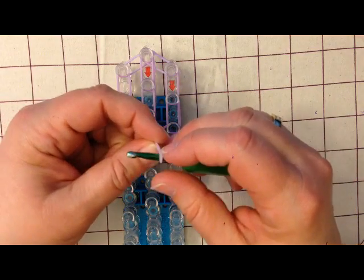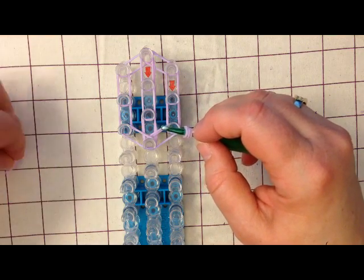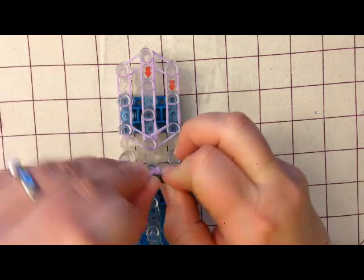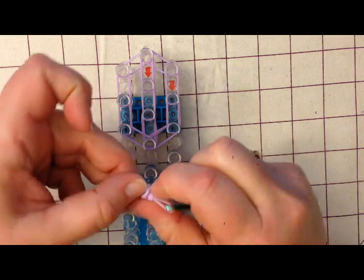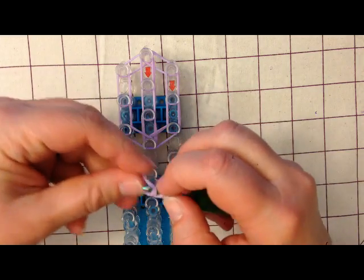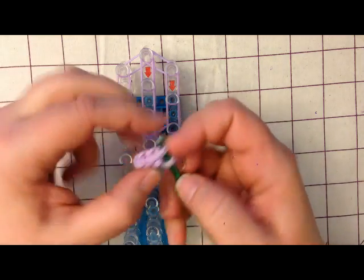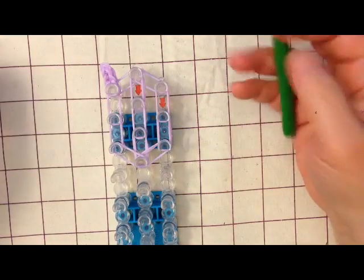To do that we're going to take a single band, wrap it round and then take some double bands and do our little ears and we're going to pop these on similarly to how we do arms normally. But for the ears we just use three pair of double bands.